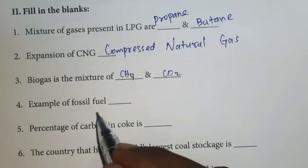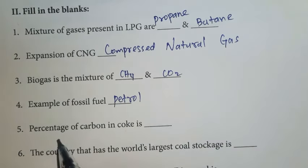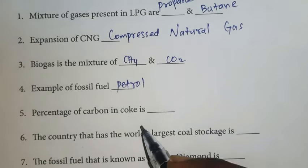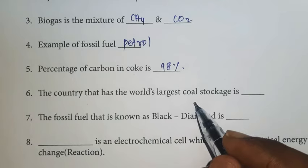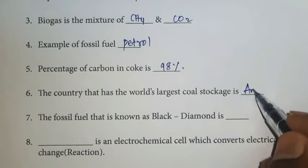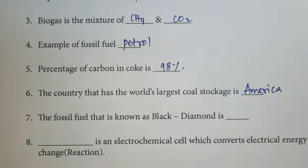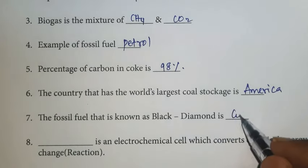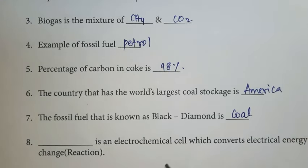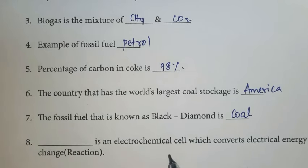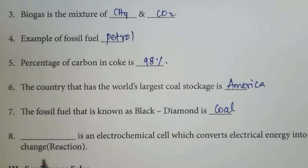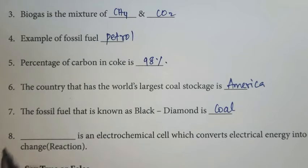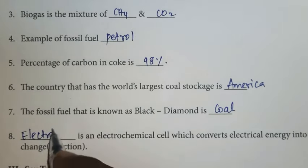Fourth one: example of a fossil fuel — petrol. Fifth one: the percentage of carbon in coke is 98%. Sixth one: the country that has the world's largest coal stockpile is America; our country is in third place. Seventh one: the fossil fuel known as black diamond is coal. Eighth one: an electrolytic cell is an electrochemical cell which converts electrical energy into chemical energy.